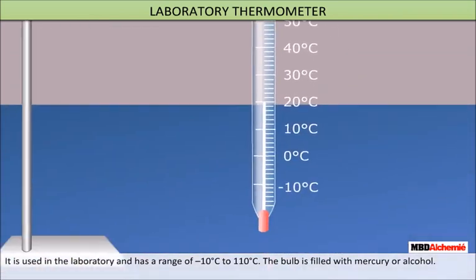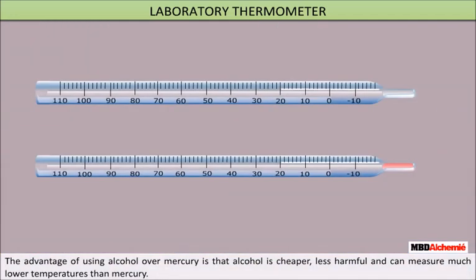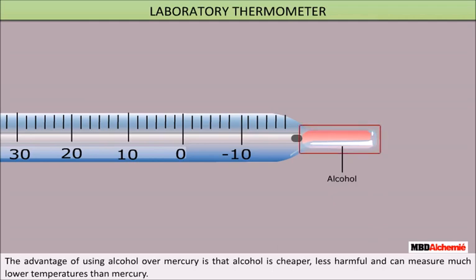The bulb of the laboratory thermometer is filled with mercury or alcohol. The advantage of using alcohol over mercury is that alcohol is cheaper, less harmful, and can measure much lower temperatures than mercury.